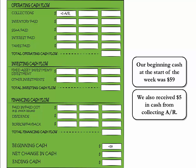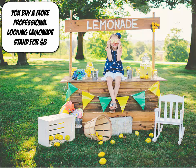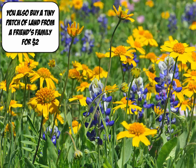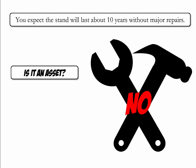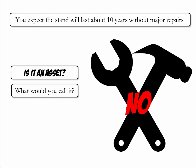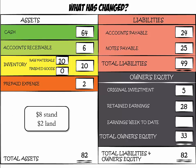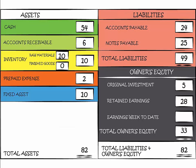We also received $5 in cash from collecting accounts receivable. You buy a more professional looking lemonade stand for $8 and a tiny patch of land from a friend's family for $2. The stand is a fixed asset. We used cash, so our cash goes down by $10, and we create a new category under assets for fixed assets. Cash has been reduced from $64 to $54.